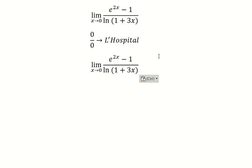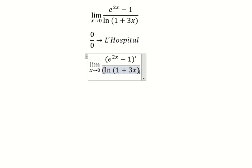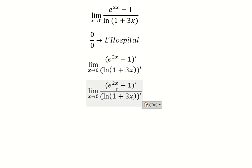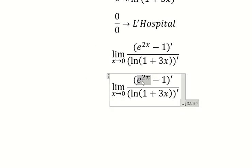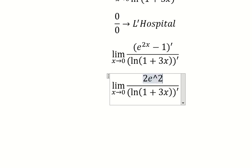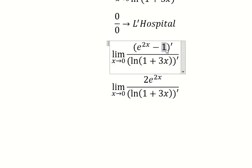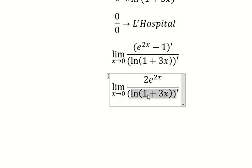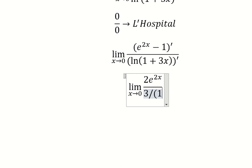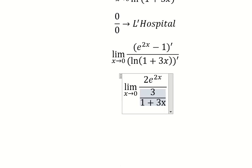That means we need to do first derivative of numerator and denominator. So first, derivative of e to the power of 2x, we have 2e to the power of 2x. This one, derivative of the constant, so you got 0. This one, we have 3 over 1 plus 3x. After we do first derivative of this one.